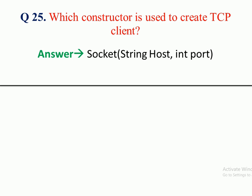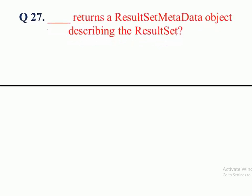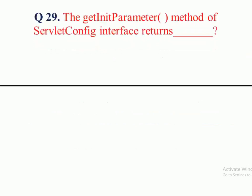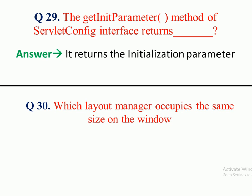Question 26: Which method sets the query parameter of the PreparedStatement object? Answer: setString method. Question 27: Which method returns a ResultSetMetaData object describing the result set? Answer: getMetaData method. Question 28: In servlet programming, a cookie is represented by the Cookie class in which package? Answer: java.servlet.cookie package. Question 29: The getInitParameter method of ServletConfig interface returns what? Answer: The initialization parameter.